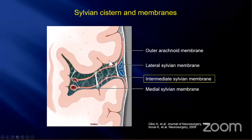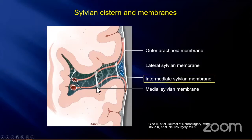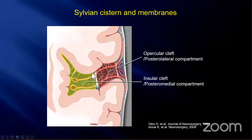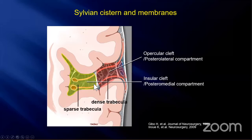This is an illustration of a coronal section of the sylvian system. There are three inner arachnoid membranes: the lateral, intermediate, and medial sylvian membranes. The intermediate sylvian membrane can be a good landmark when we open the sylvian fissure. The posterior lateral compartment has a tiny space and dense trabeculae, while the posterior medial compartment has a wide space and sparse trabeculae. The intermediate sylvian membrane is the boundary of these two compartments.